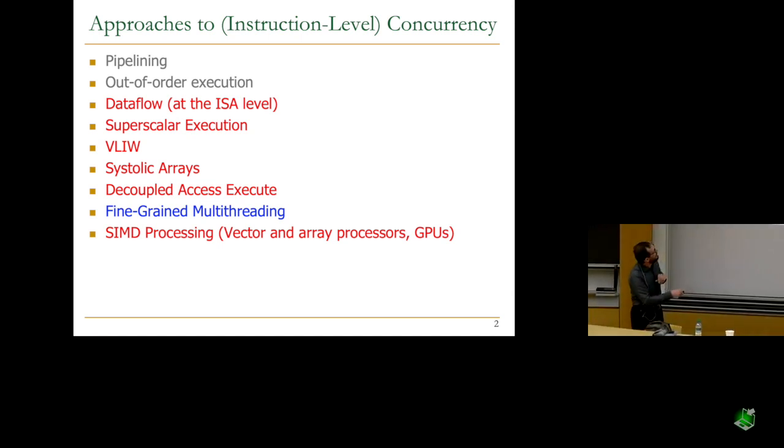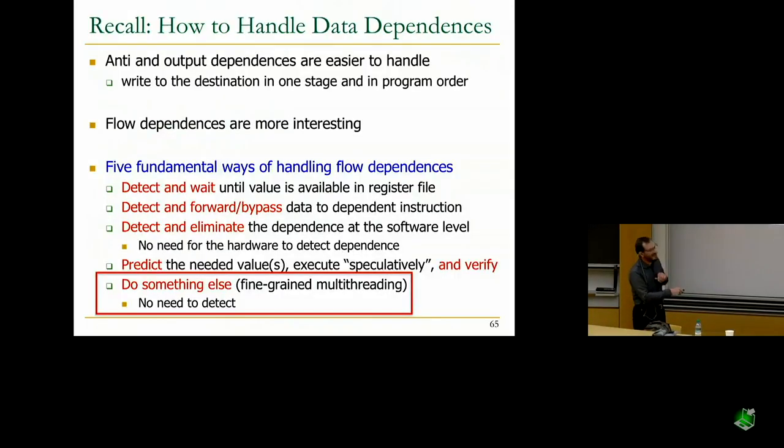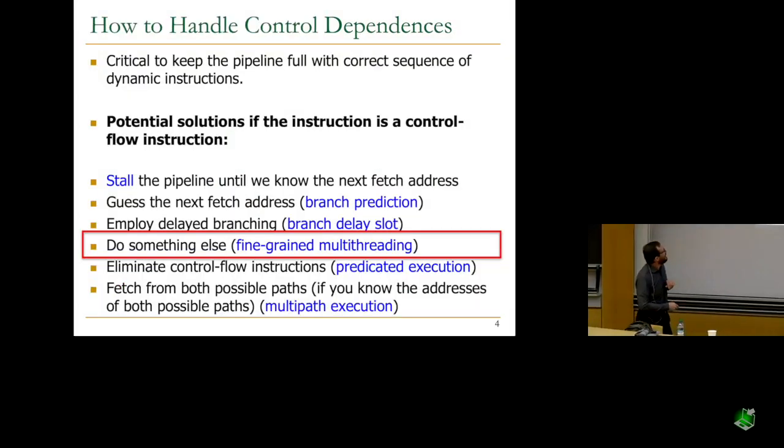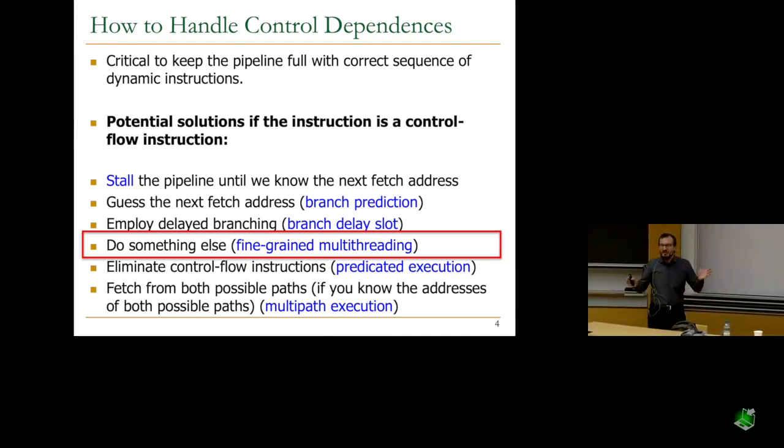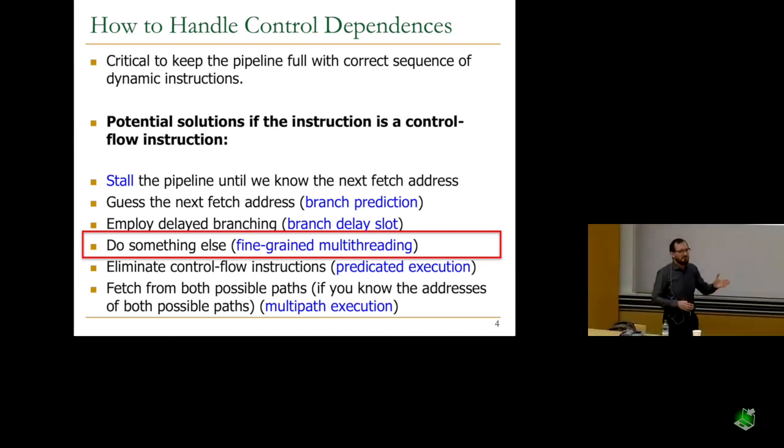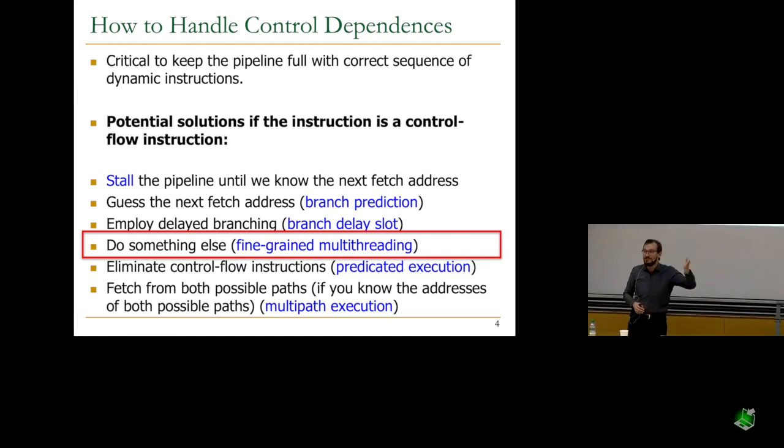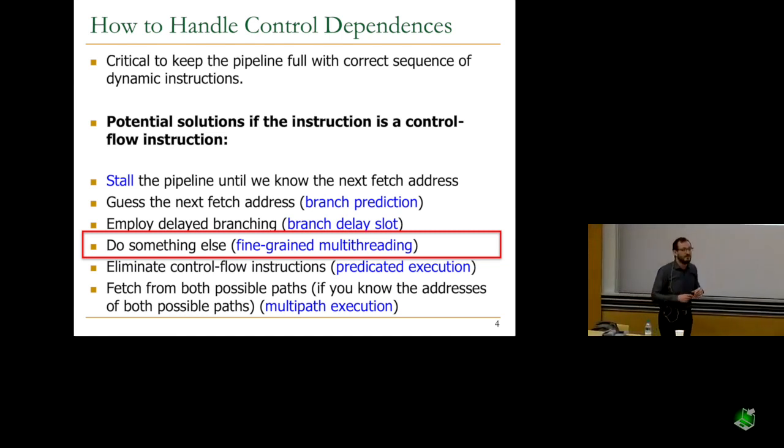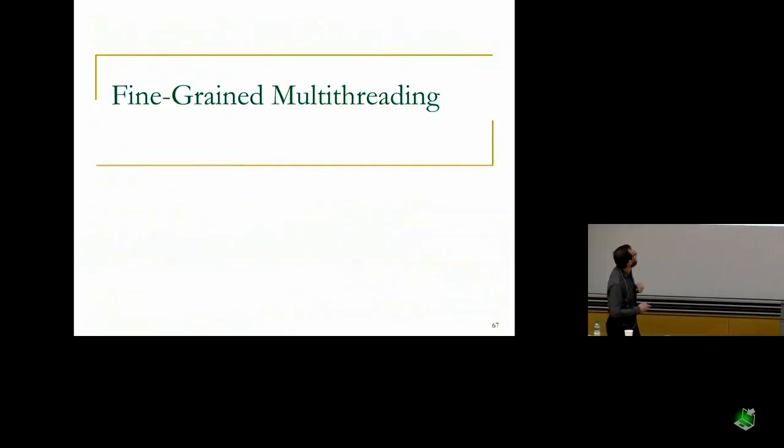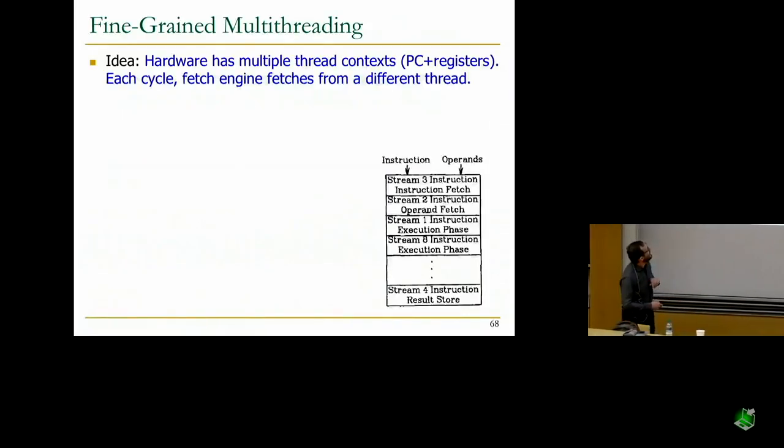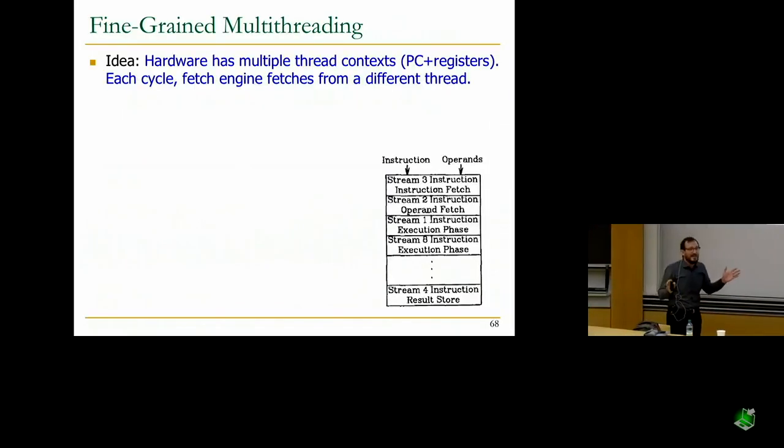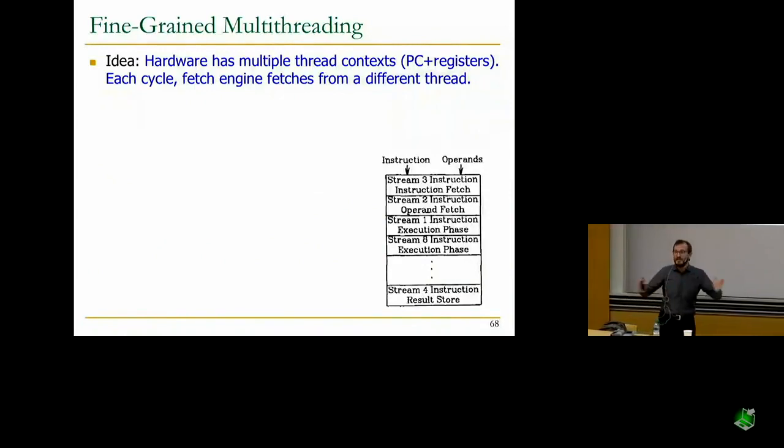How do you handle data dependencies? We said do something else. There's no need to detect data dependencies, switch to something else. How do you handle control dependencies? If you're at a branch, don't try to figure out the next instruction. Just fetch an instruction you know is independent from some other thread. That's the idea of fine-grained multithreading. It's a beautiful, very simple idea. It works when you have a lot of threads in the machine.